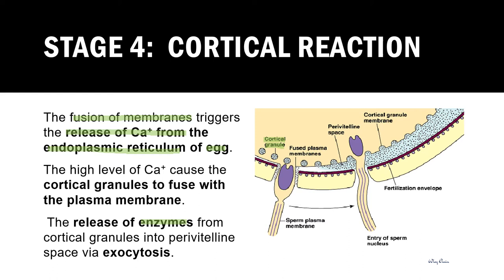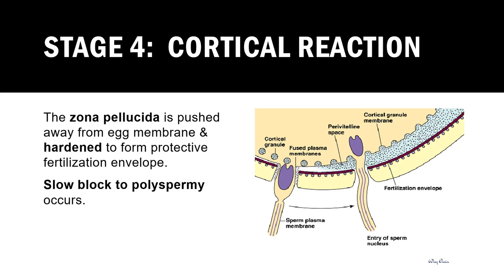The enzymes fill the space between the membrane of the egg cell and the zona pellucida. When more cortical granules move towards and fuse with the membrane of the egg cell, releasing enzymes into the perivitelline space, they push the zona pellucida away from the egg membrane. At the same time, the zona pellucida undergoes a hardening process and becomes a fertilization envelope. This process takes time, which is why it is called a slow block to polyspermy — its goal is to prevent more than one sperm from entering the egg cell.